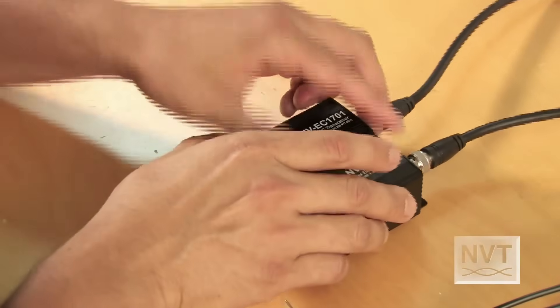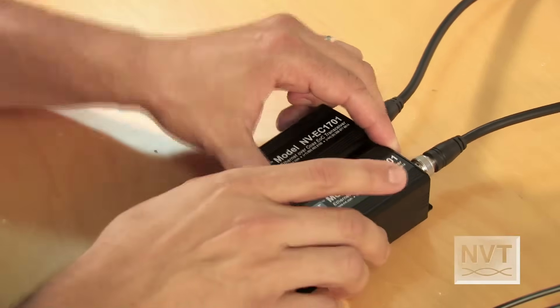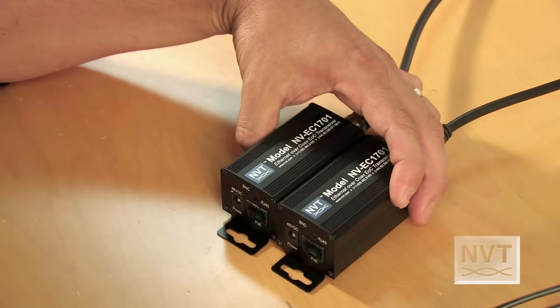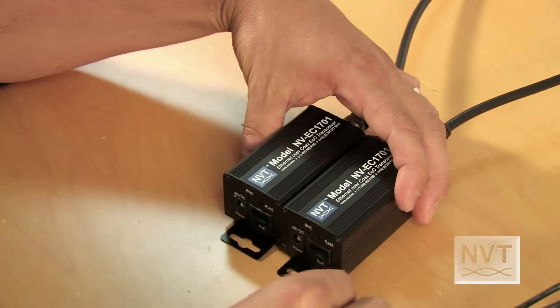Once you've connected the jumper cable, then you power one of the 1701 transceivers. It doesn't matter which one. I'm going to power the one on the right.